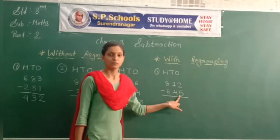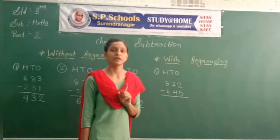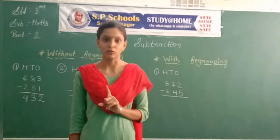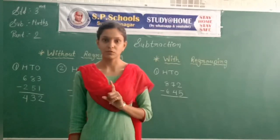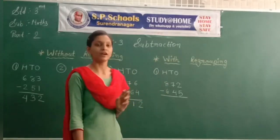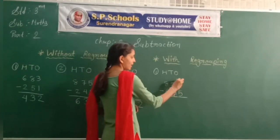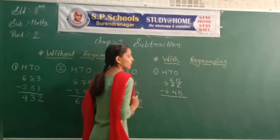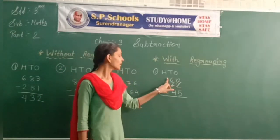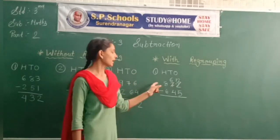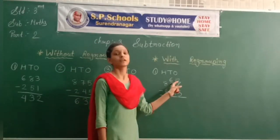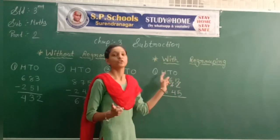Here we have a situation: 2 minus 5, and 2 minus 5 — small amount minus big amount. We cannot do small minus big directly. First, the bigger amount decreases the smaller amount. Which means we need regrouping. So big amount minus small amount is straightforward; small amount minus big requires borrowing.